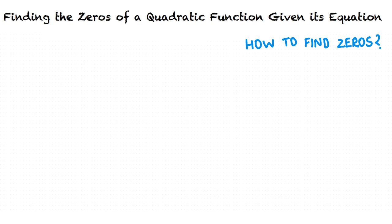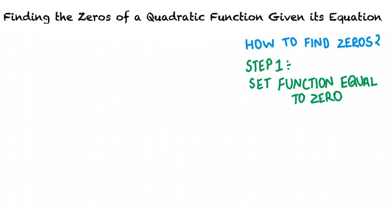How do we find the zeros of a quadratic function? In order to find the zeros, we will follow three steps. The first step is to set the quadratic function equal to zero. We set the function equal to zero because we are interested in finding the specific values of x for which the function intersects the x-axis. At those points, the value of y would be zero — this is why we equate the function to zero.